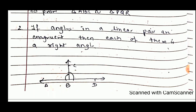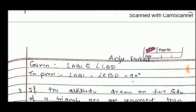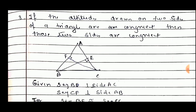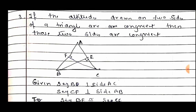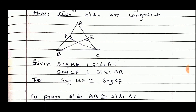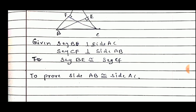If angles in a linear pair are congruent, then each of them is a right angle. Draw the figure — given: angle ABC is congruent to angle CBD; to prove: angle ABC equals angle CBD equals 90 degrees. If the altitudes drawn on two sides of a triangle are congruent, then those two sides are congruent. Given: segment BE perpendicular to segment AC, segment CF perpendicular to segment AB, and segment BE congruent to segment CF. To prove: side AB is congruent to side AC.